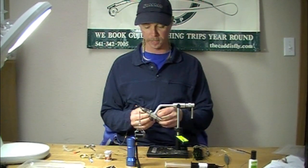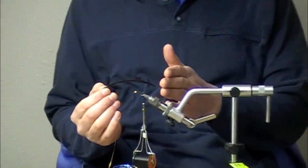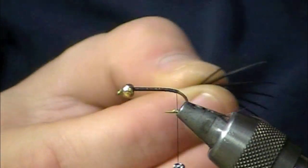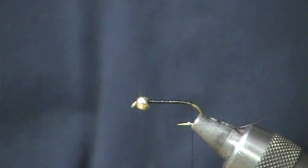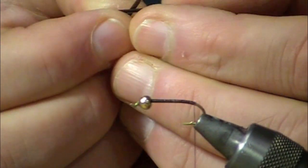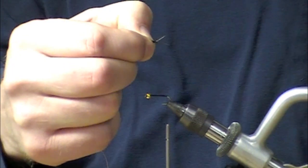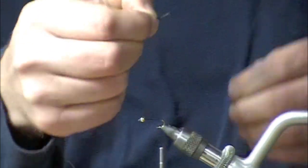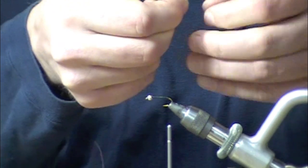I've taken my 6-aught uni-thread clear on back to the bend and right now I'm going to cut off two pieces of goose bio for the tail. Typically what I'll do is cross them in my fingers and kind of get the split that I'm looking for, making sure that they're even.